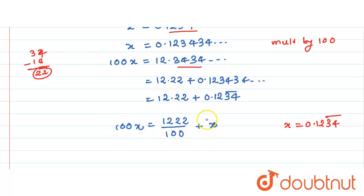Just subtract this x from 100. So this is 100x minus x is equal to 1222 divided by 100. Isn't it?